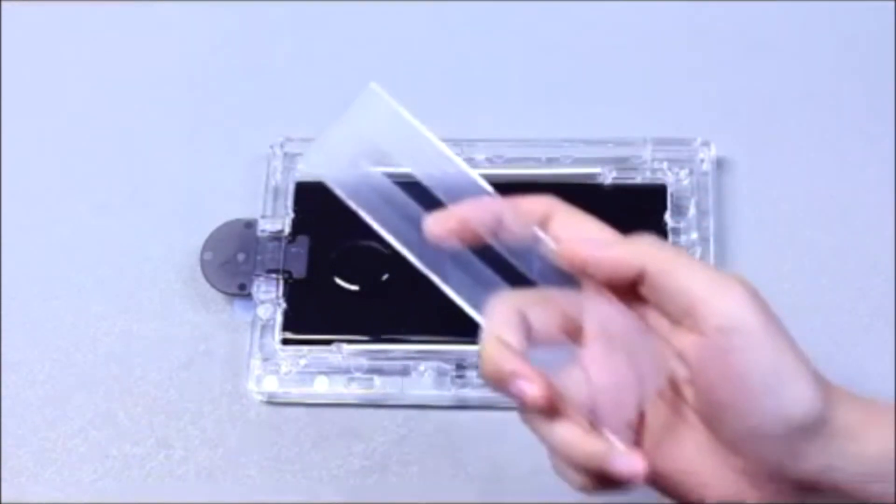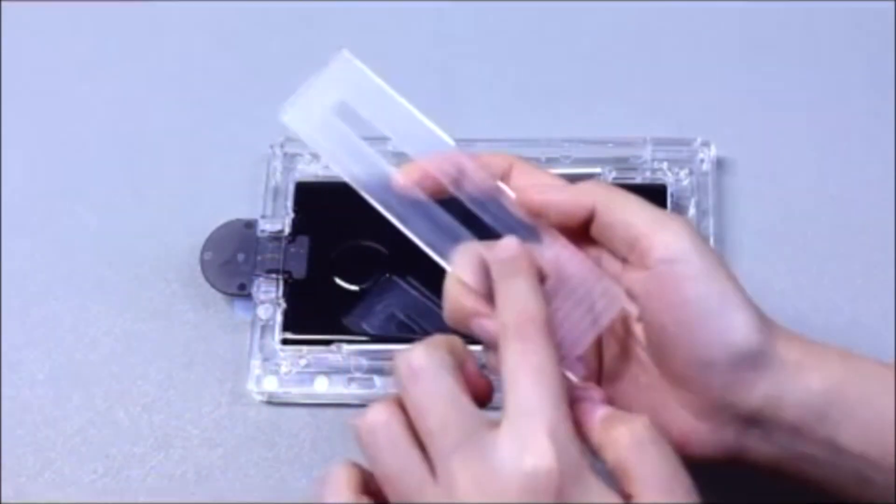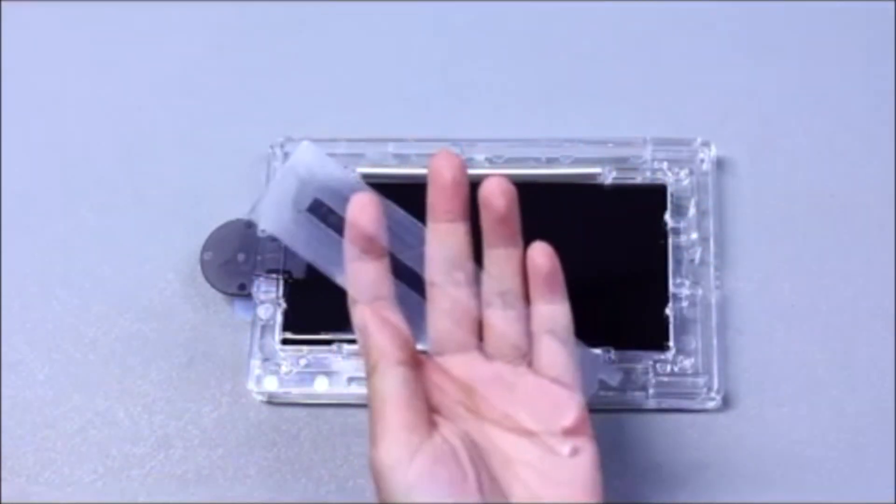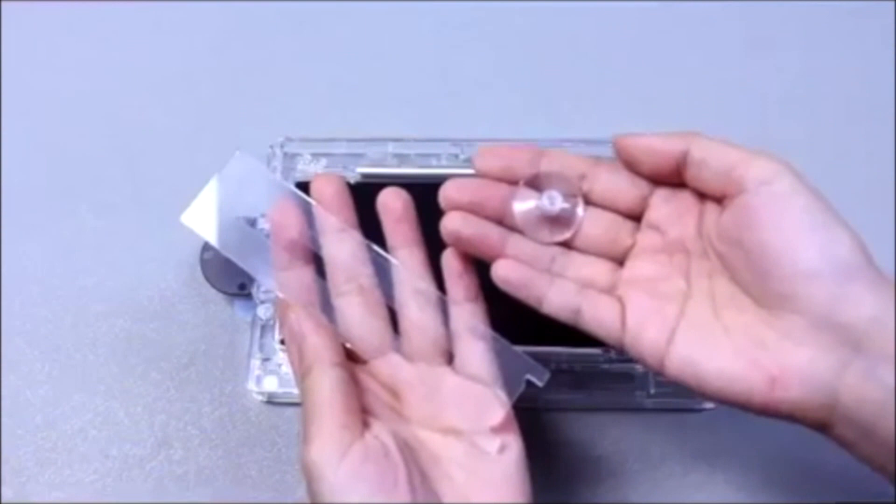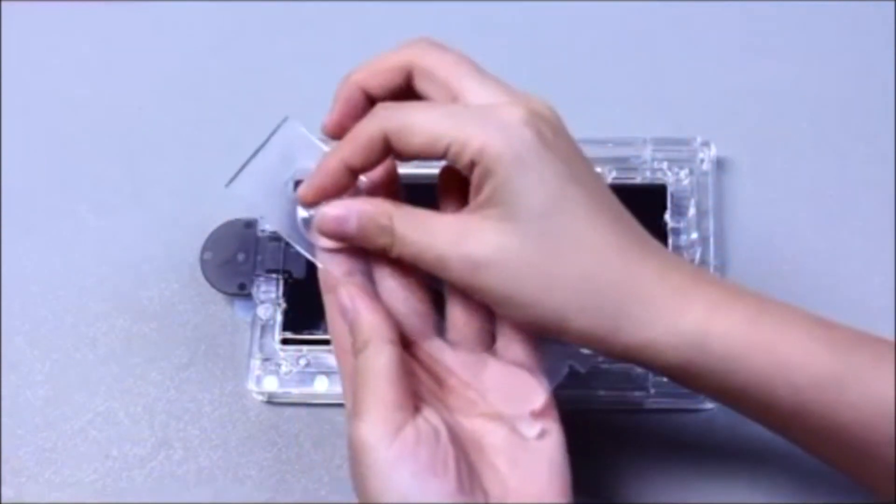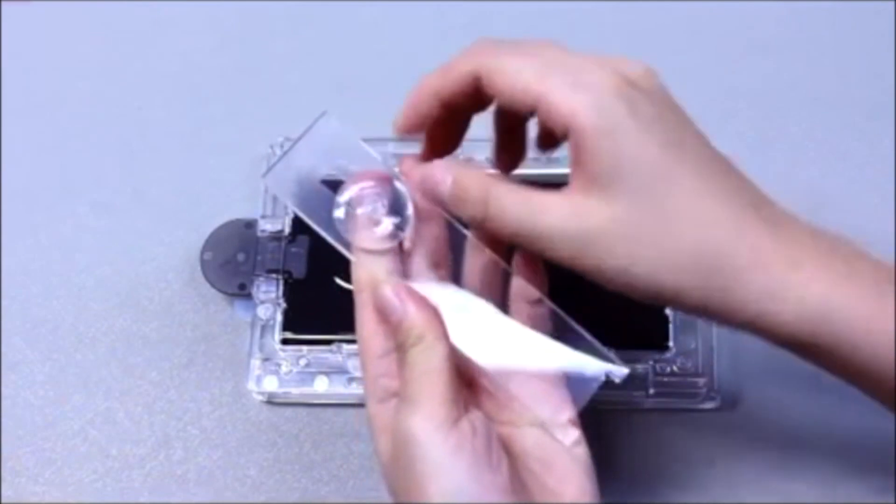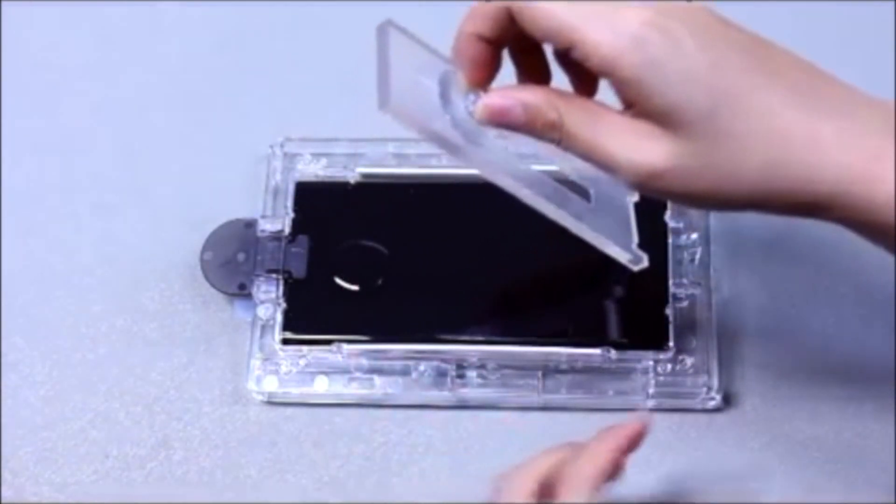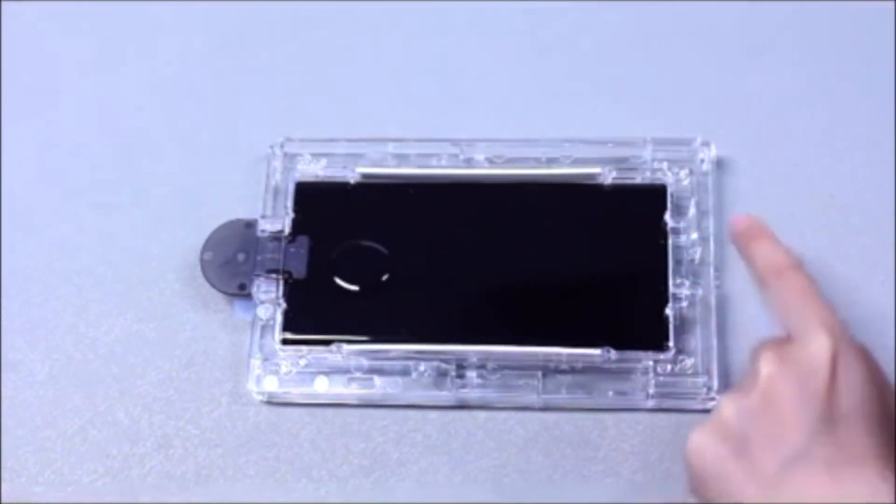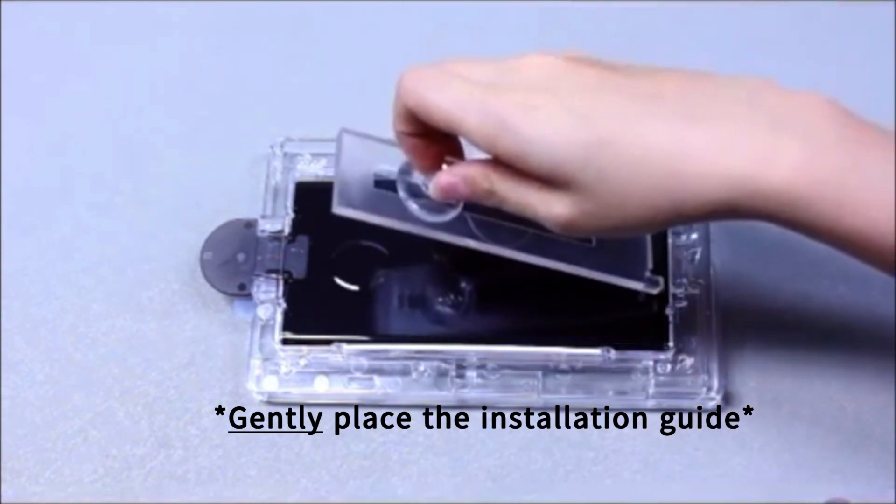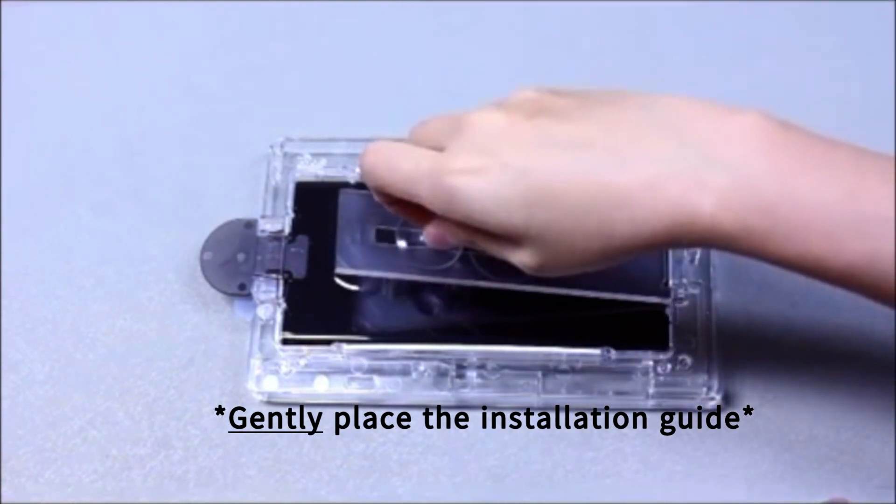This is the new installation guide. One side has a rectangle on it. One side is completely smooth. Place the small suction cup on the smooth side above the circle, just opposite the two bottom grooves. Now, carefully place the guide into the grooves on the bottom and lean it against the glass.